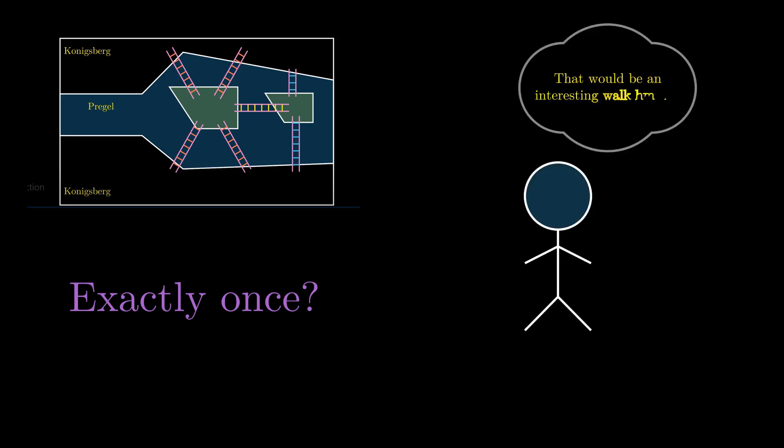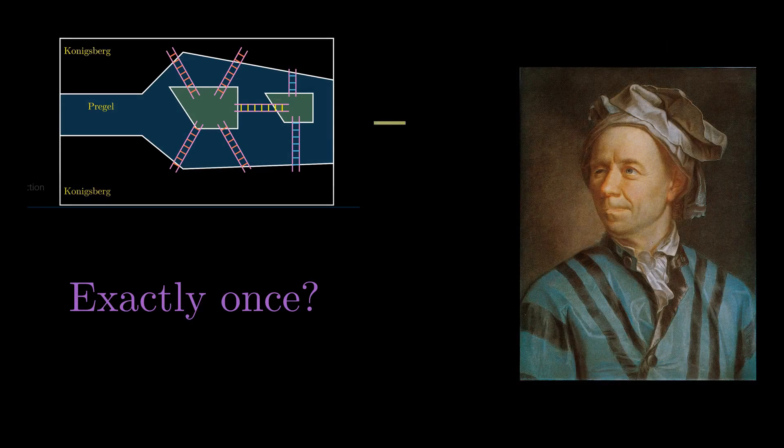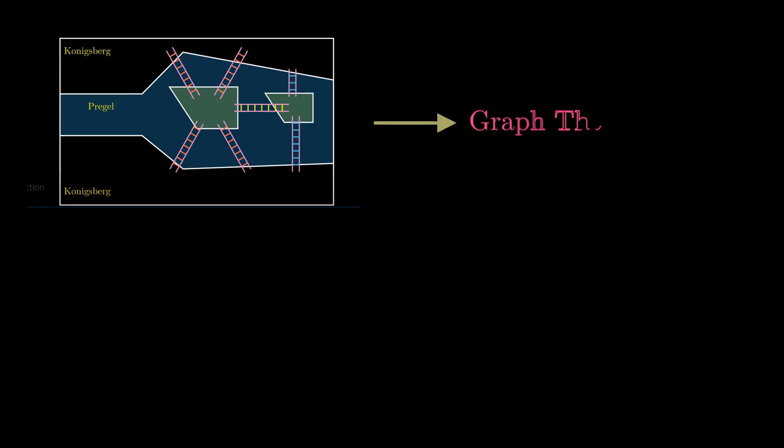While our first instinct might be to see if such a path exists through hit and trial, Euler came up with an ingenious idea to look at the problem. To understand how graph theory can be used as a tool to explore the problem, let's first try simplifying the problem.